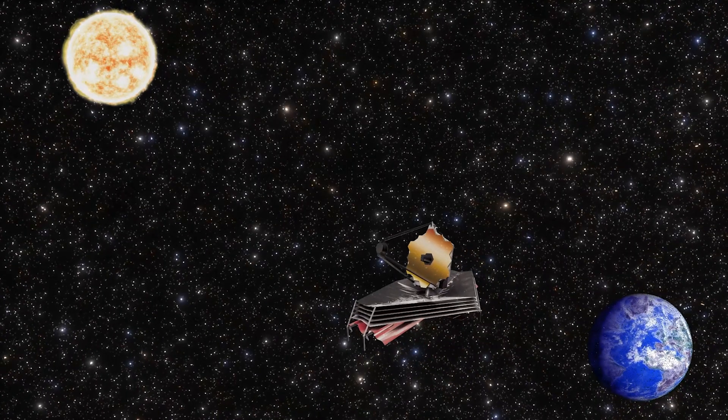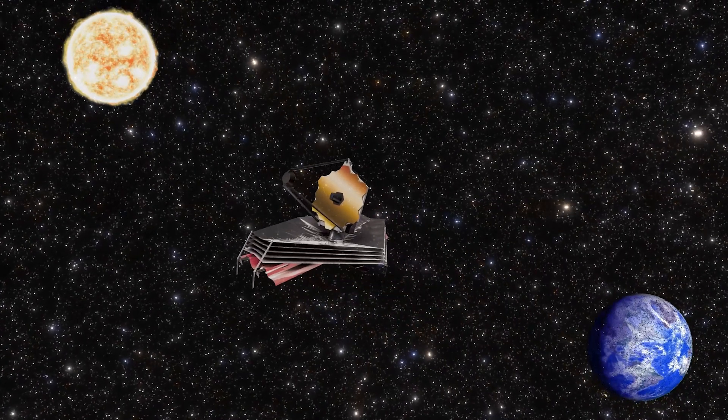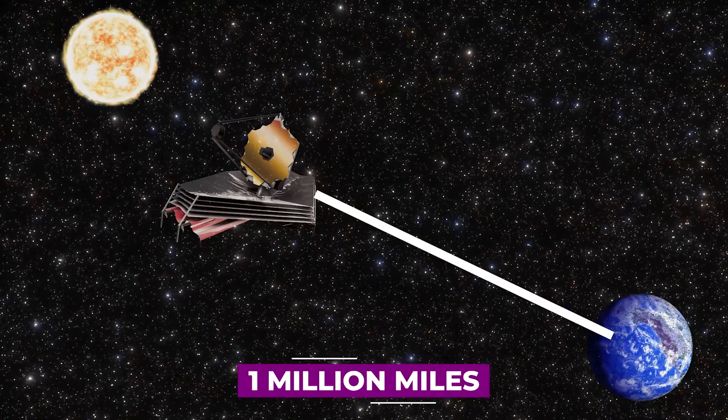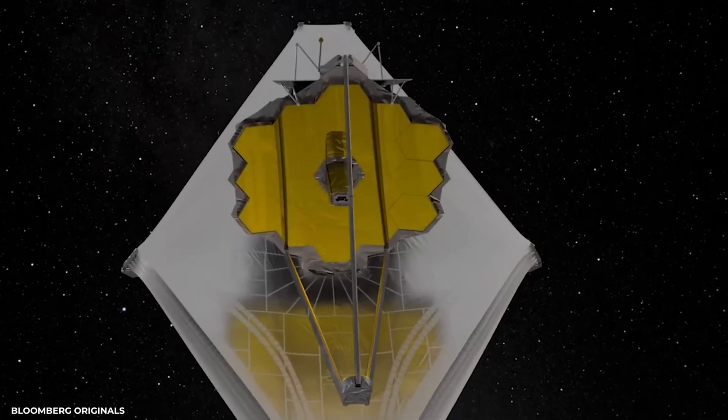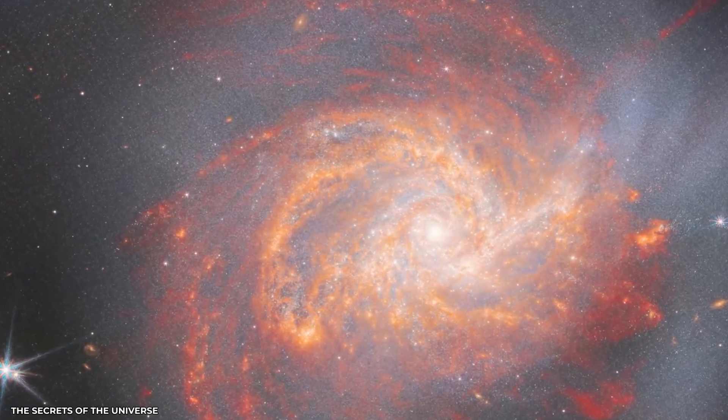The James Webb Space Telescope is an infrared observatory that orbits the sun about one million miles from Earth in order to discover the earliest galaxies that formed in the early cosmos and to observe stars developing planetary systems.